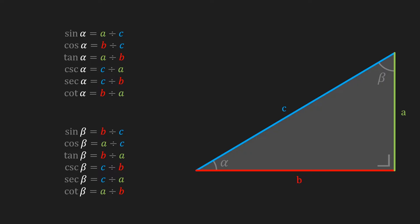Before we move on, I thought we'd have a quick overview of all the functions we just saw. Given this triangle, I've made a list of how to calculate the sine, cosine, tangent, cosecant, secant, and cotangent of both angle alpha and angle beta. You don't have to remember all of this by heart — all you need to know is SOH, CAH, TOA, and then you can just derive these formulas.